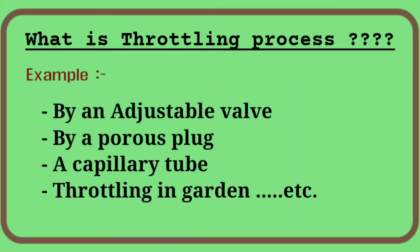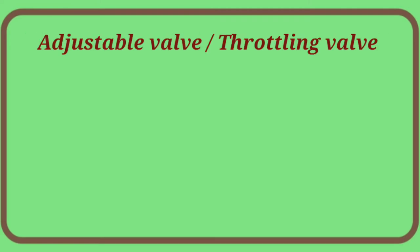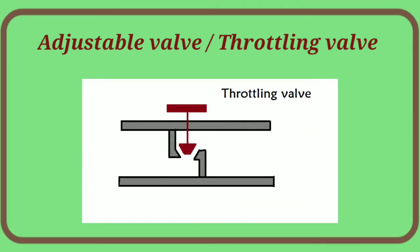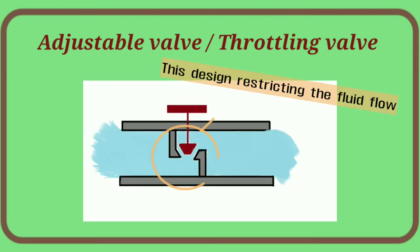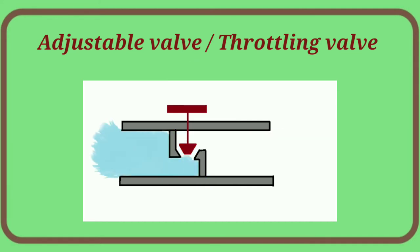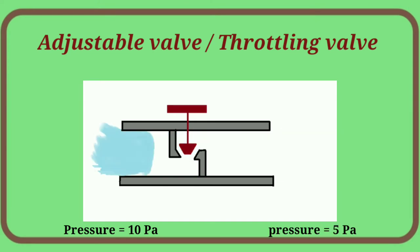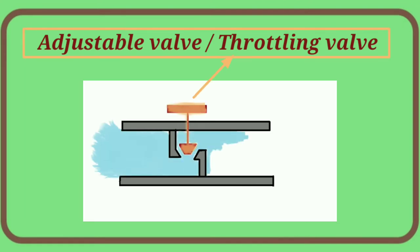Now, how can we perform the throttling process? I will show some examples. First is with the help of an adjustable valve. As you can see in this figure, this valve is designed so that fluid can easily flow, and we can adjust or restrict the flow of fluid. So if the pressure on one side is 10 pascal, after the throttling valve the pressure is 5 pascal — that is the pressure drop.